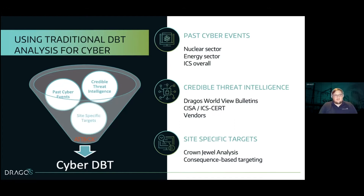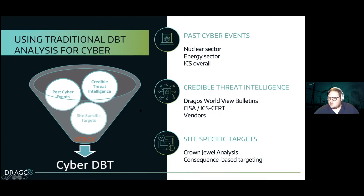For past events, we may look at things that have happened in the nuclear sector or the energy sector overall, and we can also expand to other sectors if desired. For threat intelligence, there are lots of sources — you can get it from CISA or threat intelligence firms such as Dragos, as well as notifications from system vendors or OEMs. And critically, we need an understanding of our systems and their value as potential targets to adversaries — what are our high consequence events and what are the pathways that lead to them?